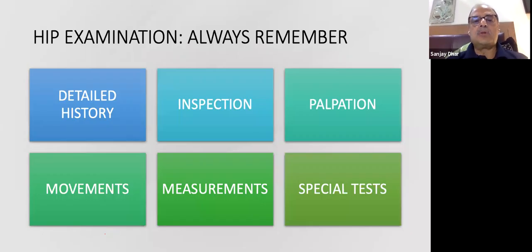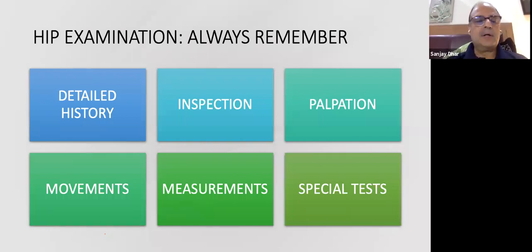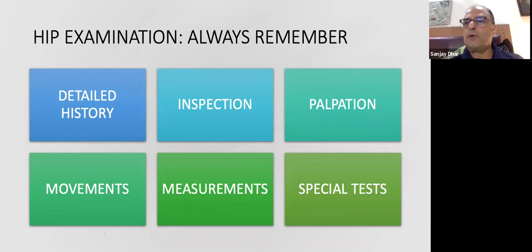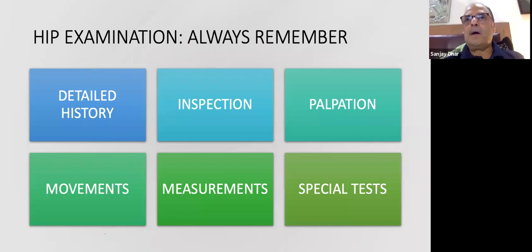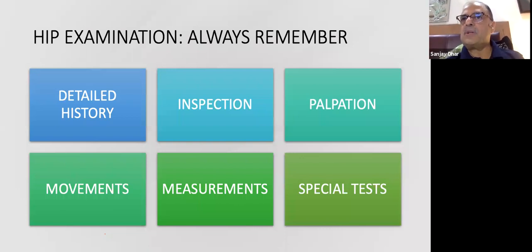History is the most important base on which you build your diagnosis and plan. Take time taking history. Follow the same routine: inspection, palpation, movements, measurements, special tests — but history remains the base. As an examiner, I can tell you that most of the time the examiner will not cross-check the history from the patient unless you give a contrarian point that doesn't match your other findings.